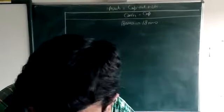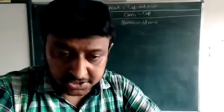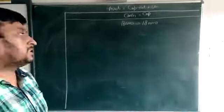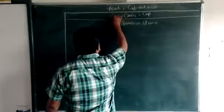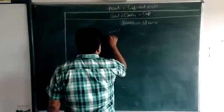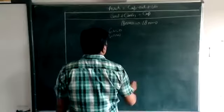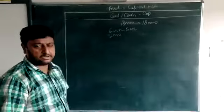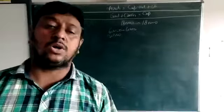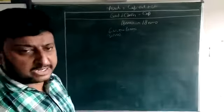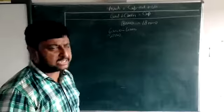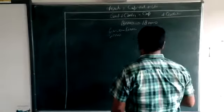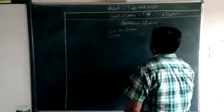Next, purchase goods: sixty thousand from cash and thirty thousand on credit. For the cash purchase of sixty thousand, we make a new head called 'goods' for sixty thousand and reduce cash. For the credit purchase of thirty thousand on credit, we make another new head for thirty thousand on the liability side.